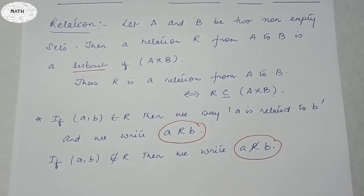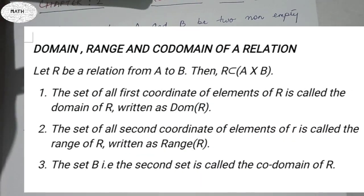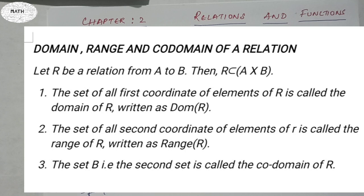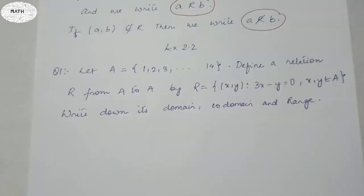Now we look at domain, range, and co-domain. Let R be a relation from A to B, so R is a subset of A cross B. Number one: the set of all first coordinates of elements of R is called the domain of R, written as dom R. Number two: the set of all second coordinates of elements of R is called the range of R, denoted by range R. Number three: the set B is called the co-domain of R.